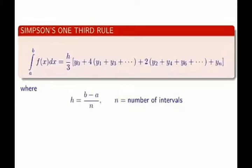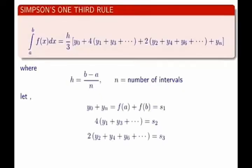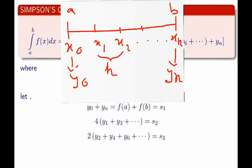h by 3 into y0 plus 4 into the sum of all odd ordinates (that is y1, y3, y5, etc.) plus 2 into sum of all even ordinates (that is y2, y4, y6, etc.) plus the last value yn. h is the length of each interval, y0 is the functional value of f at the point x0, that is a.